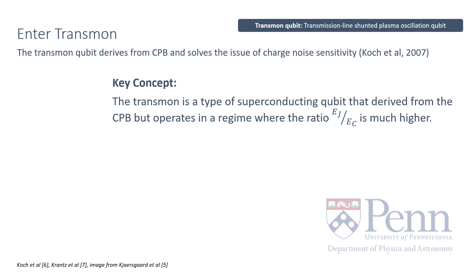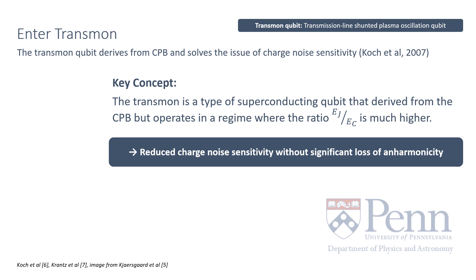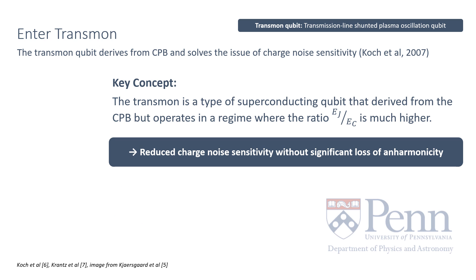Now into the transmon in 2007. Of the two approaches mentioned earlier, the transmon definitely aligns more with the second. The transmon qubit, or transmission line shunted plasma oscillation qubit, is a type of superconducting qubit derivative of the Cooper pair box, but operating in a regime of a much higher ratio of Josephson energy and charging energy, Ej over Ec. What we achieve from this is reduced charge sensitivity without significant loss of anharmonicity. As the ratio increases, the charge dispersion decreases exponentially with respect to Ej over Ec, and a high charge dispersion means more charge noise that the qubit is exposed to.